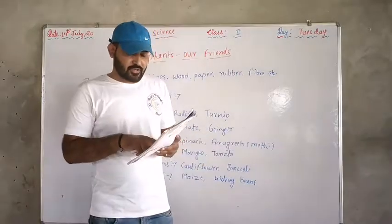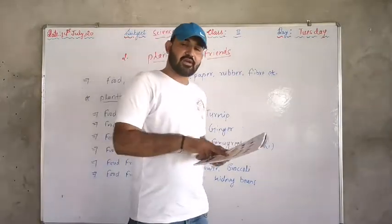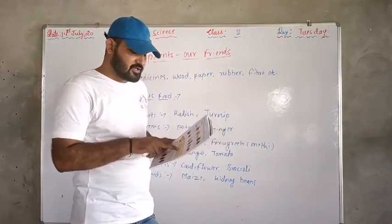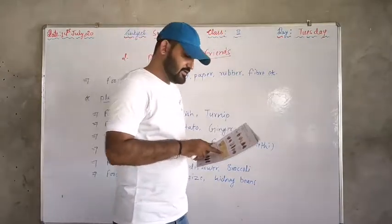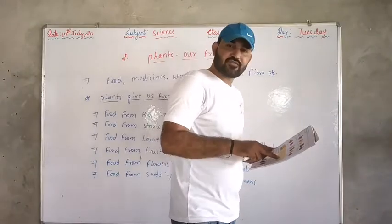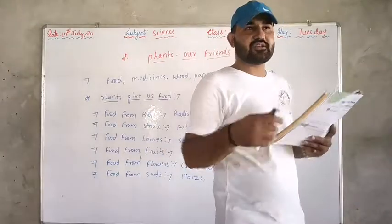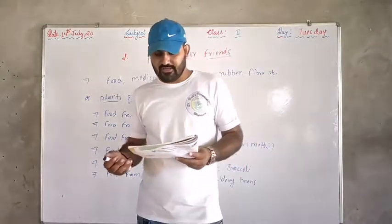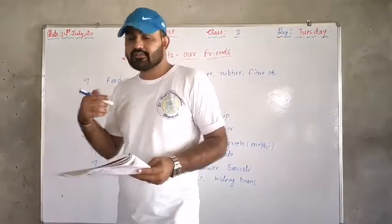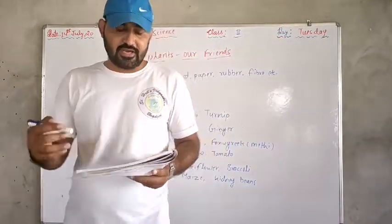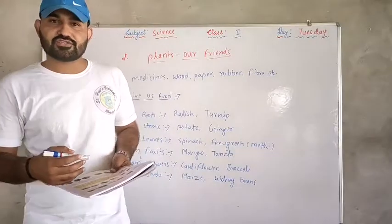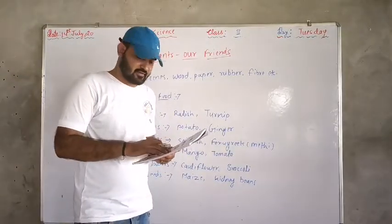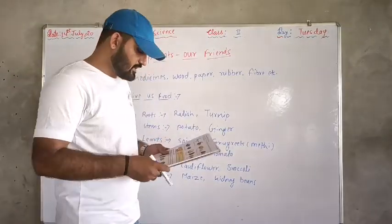Next: tomato and cucumber (kakdi) are eaten as vegetables. But they are actually fruits — phal hain (they are fruits). Okay?